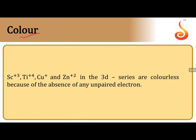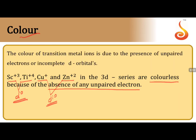Color-exhibiting property: the presence of unpaired electrons is essential. If there are no unpaired electrons, the species is colorless. For example, Sc³⁺ and Ti⁴⁺ have d⁰ configuration; Cu⁺ and Zn²⁺ have d¹⁰ configuration — no unpaired electrons, so they are colorless. The color of transition metal ions is due to d-d transitions: splitting of degeneracy into t₂g and eg levels; excitation and de-excitation in the visible region produces color.